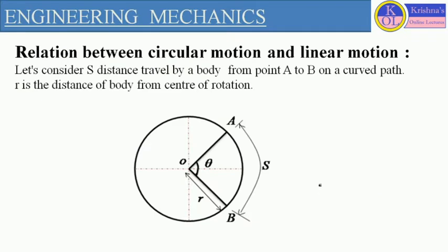Here I will discuss some equations which generally define the relation between circular motion and linear motion. We will consider one circular path having radius R and center O. O represents the center of the circle, and OA and OB represent the radius of the circle.